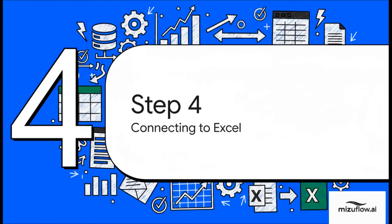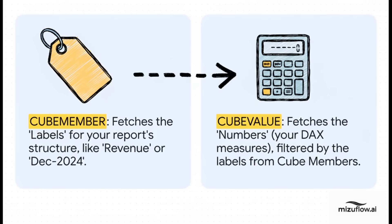We've built our data engine and programmed the calculation brain. Now for the grand finale — step four. We're going to connect all this incredible power back to the good old Excel grid, and the way we do this is with two key functions: CUBEMEMBER and CUBEVALUE. CUBEMEMBER is the label — it's the function you use to pull in the text for your rows and columns, like 'Revenue' or 'December 2024.' CUBEVALUE, on the other hand, is the number — it goes into the data model, grabs the result of one of your DAX measures, and filters it using the labels you set up. Label and number. That's it.